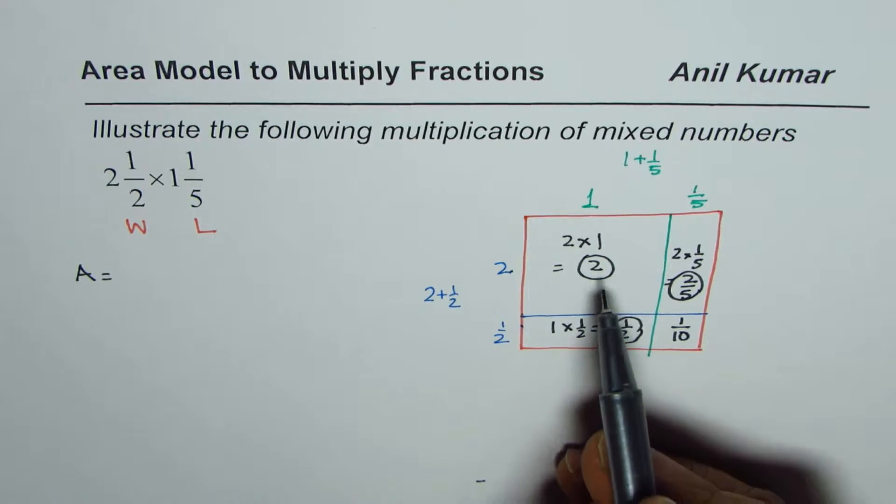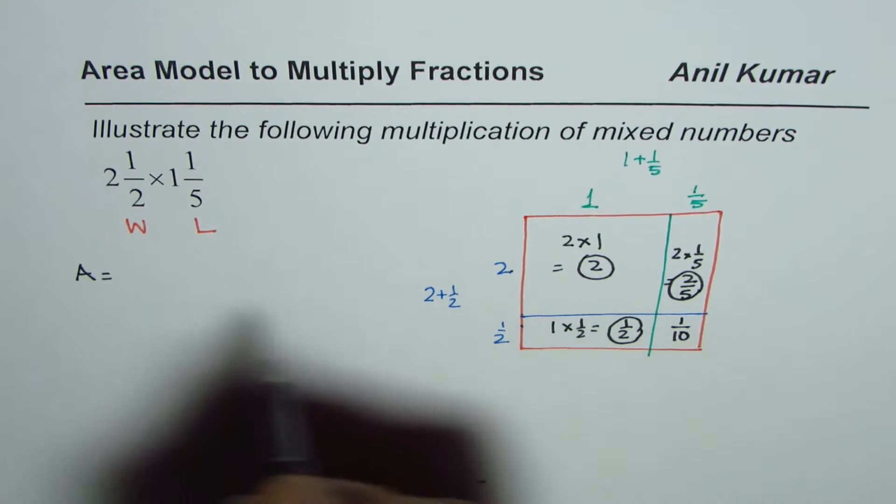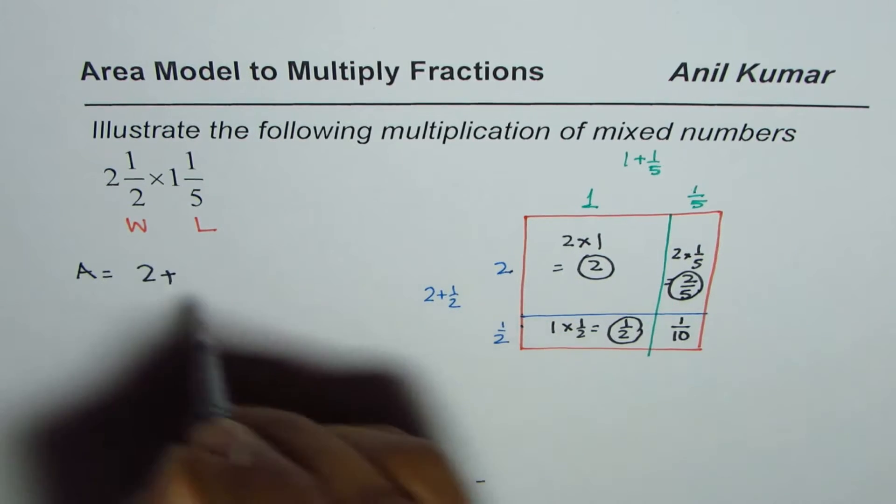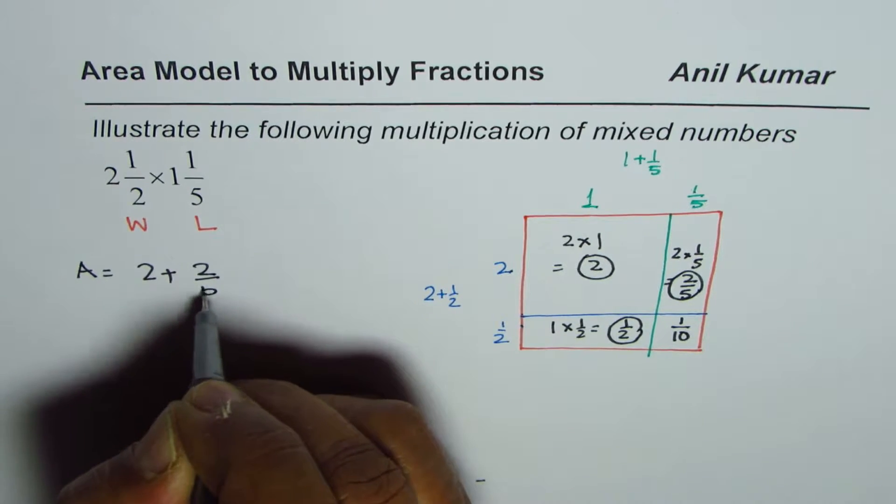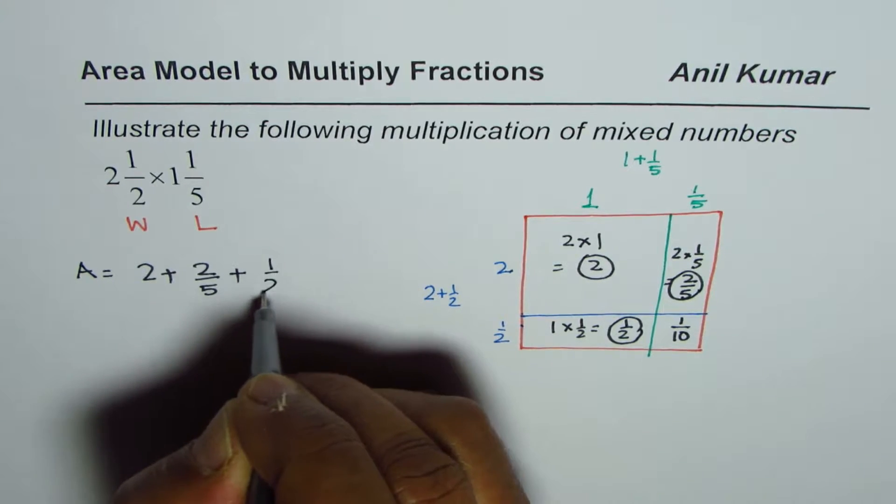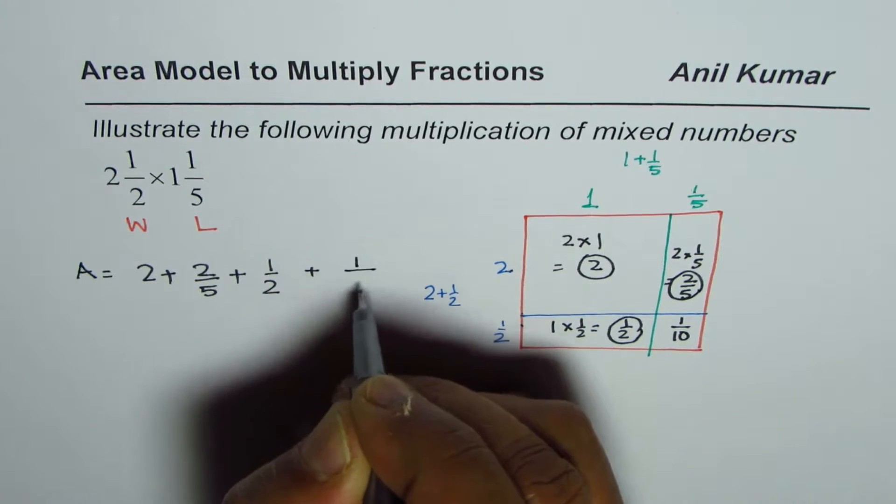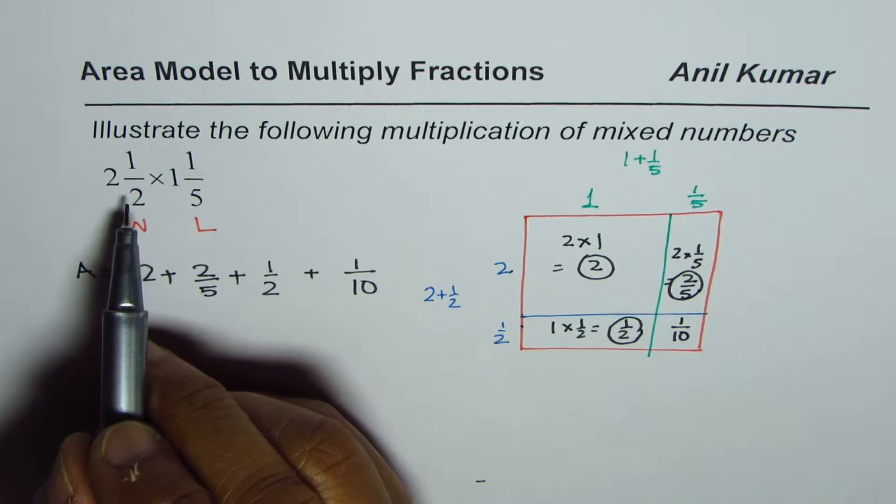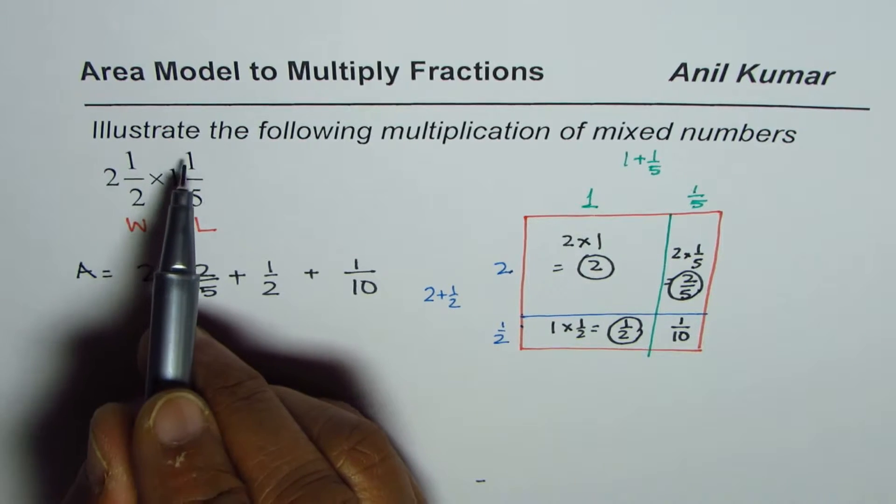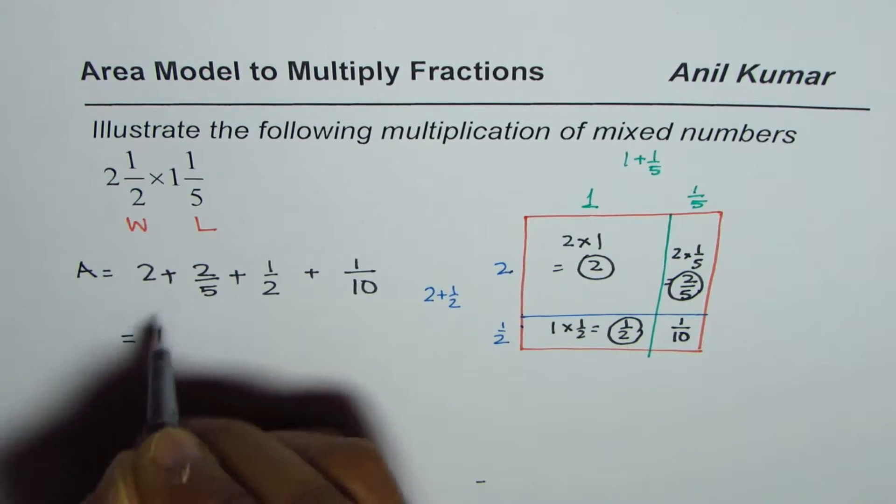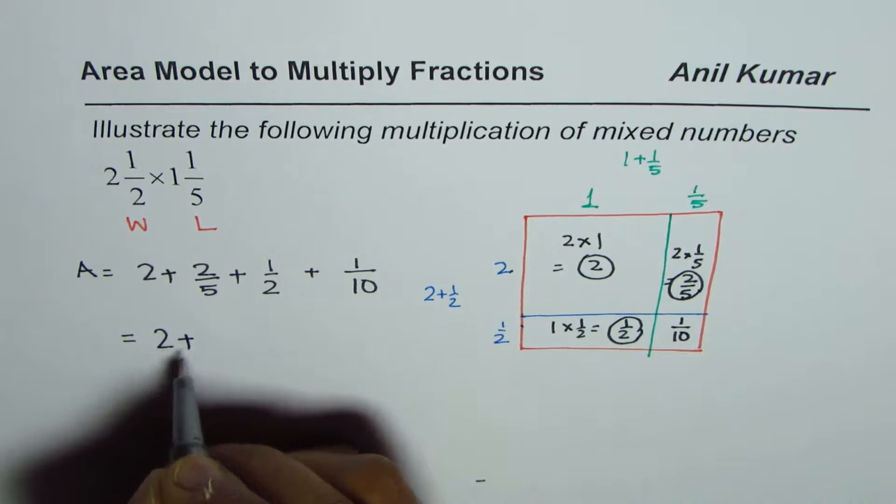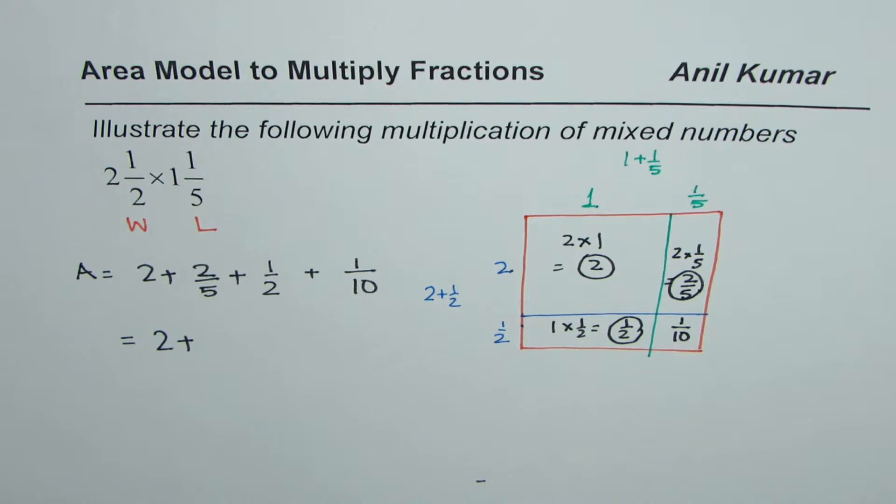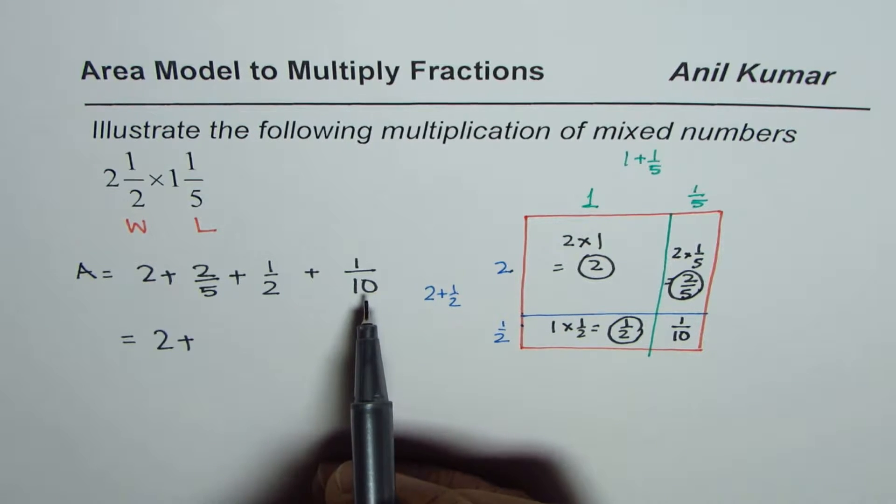Now total area of this rectangle is the sum of these areas. We have 2 + ⅖ + ½ + 1/10. Adding them all gives us the total area which is the product of 2½ times 1⅕. It is 2 plus all these fractions.